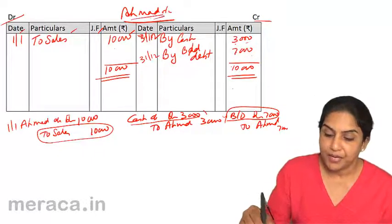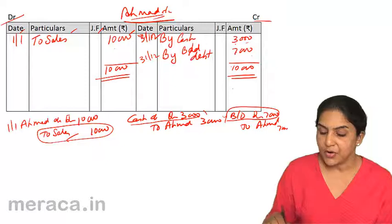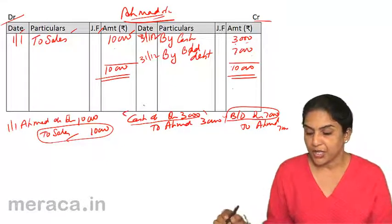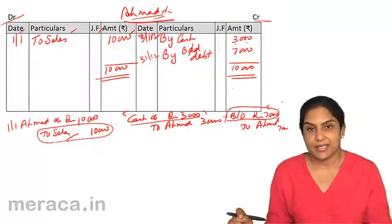Just like we made Ahmad's account, we would similarly make sales account. We will similarly make cash account. We will similarly make bad debts account.